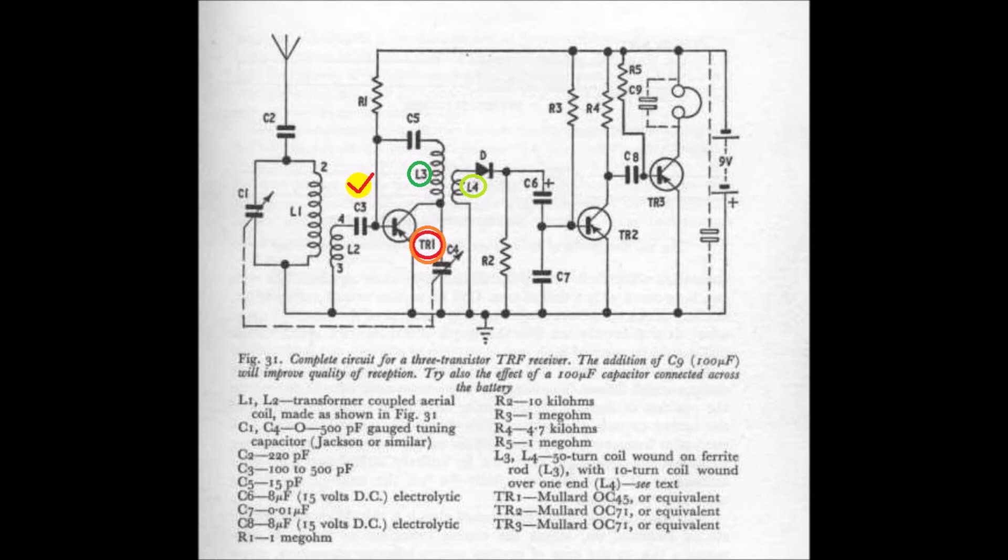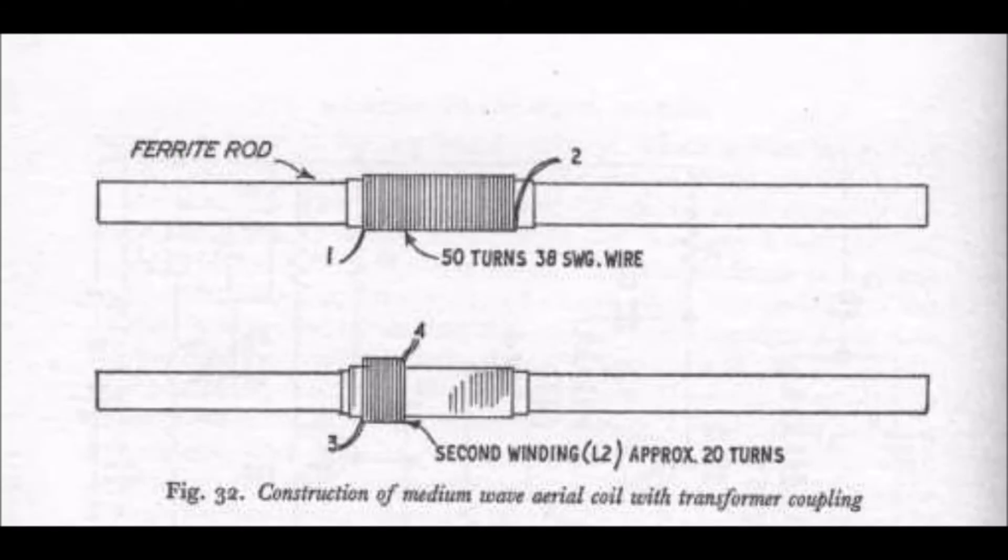And two important considerations apply to this part of the circuit. Number one, keep the leads connecting the various components as short as practicable. Number two, the coil L3-L4 must be screened from coil L1-L2 and adjacent components. The best way to do this is to cut a piece of thin aluminum sheet which can be bent to fit around L2-L3 just like a physical screen.